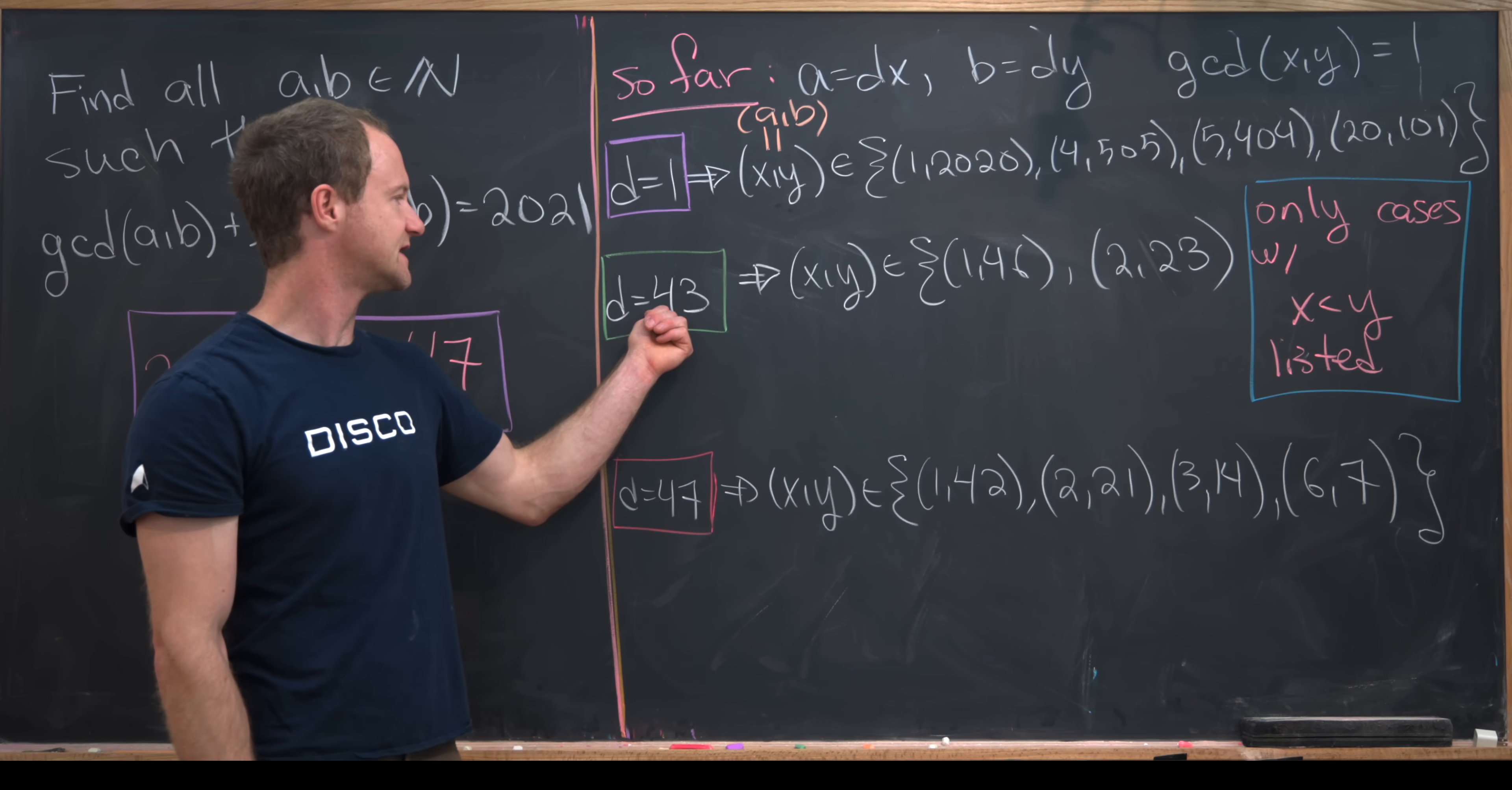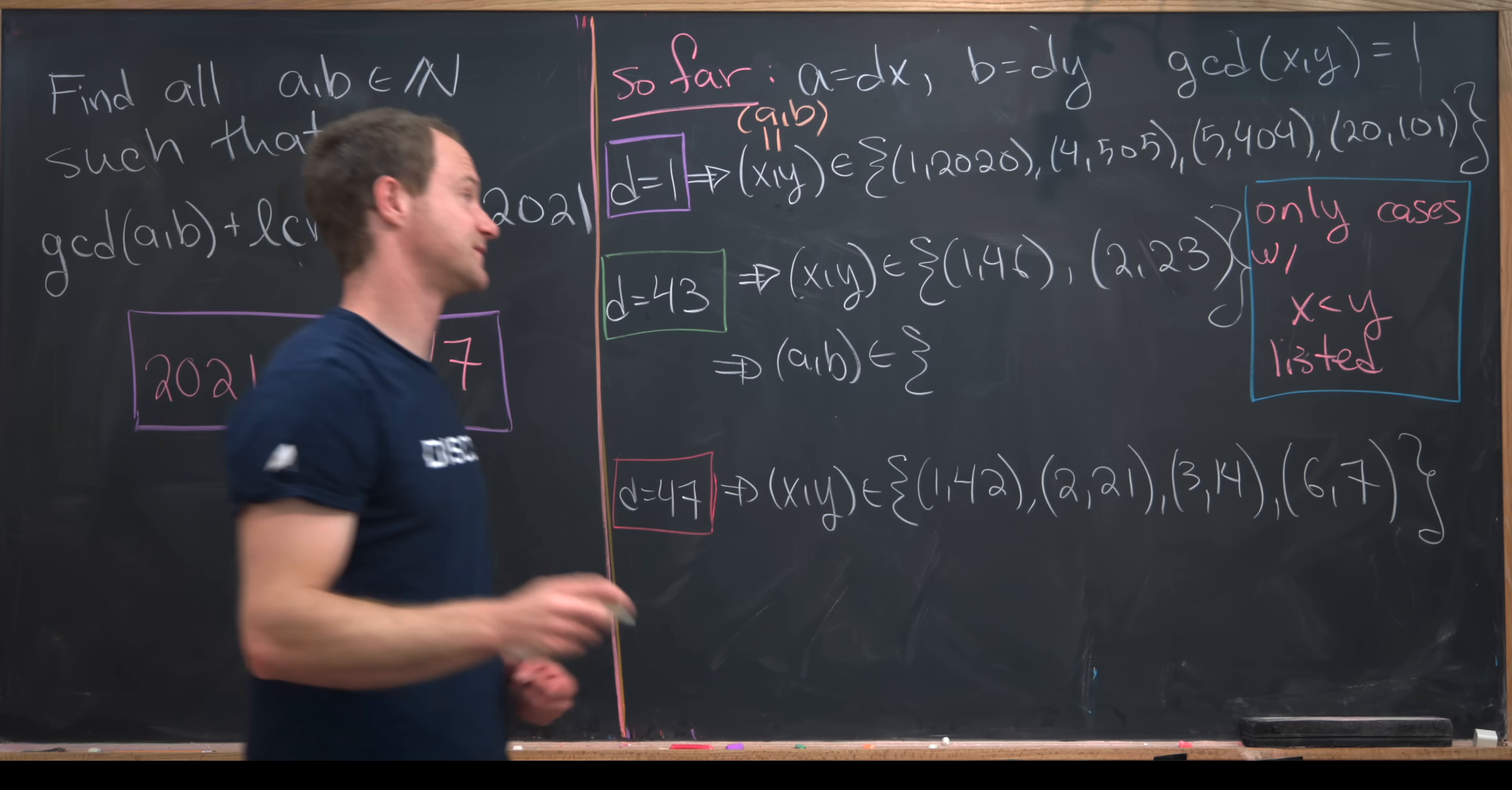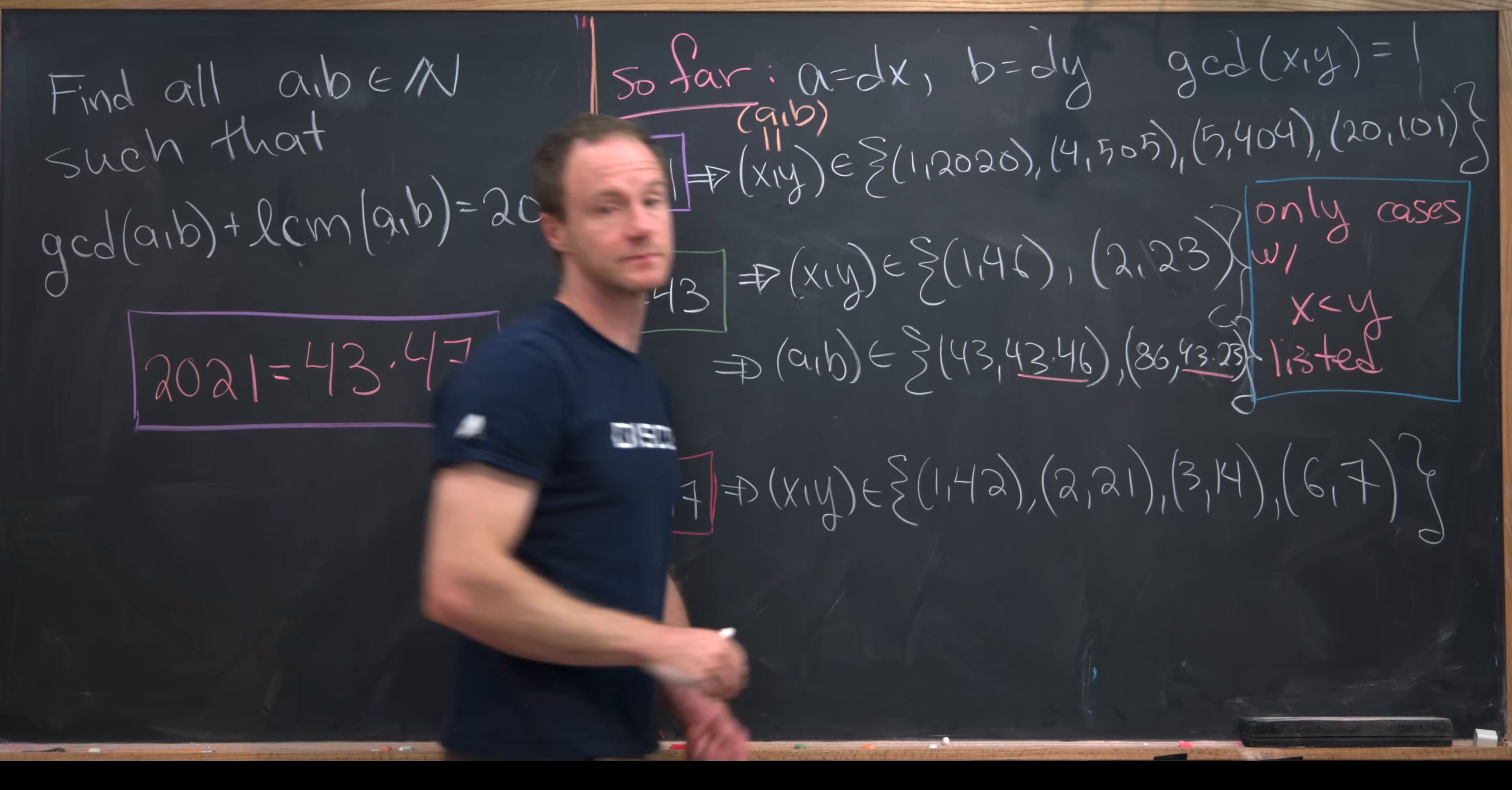Let's look at this next case. D is equal to 43. We got that X and Y had to be from this four-element set, but I've only written two of the elements, the ones where X is less than Y. But since A is equal to DX and B is equal to DY, we know that AB comes from the following set under this setup. We've got that it's 43, 43 times 46, that would be one possibility. Two times 43, but let's see, that's going to be 86 and 43 times 23. And of course, the permutations of those. I'll let you guys multiply these numbers out if you want to.